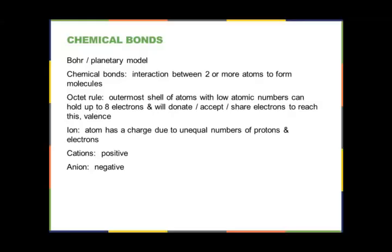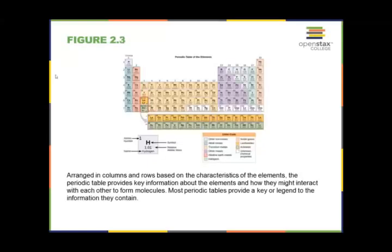There is this octet rule: the outermost shell of atoms with low atomic numbers can hold up to eight electrons. Your first shell — for hydrogen and helium — holds only two electrons; the next shells hold eight. This octet rule applies to atoms with low atomic numbers because the model doesn't work as well for higher atomic numbers. The outermost ring wants to have eight electrons and will donate, accept, or share electrons to reach this state, which we refer to as its valence.